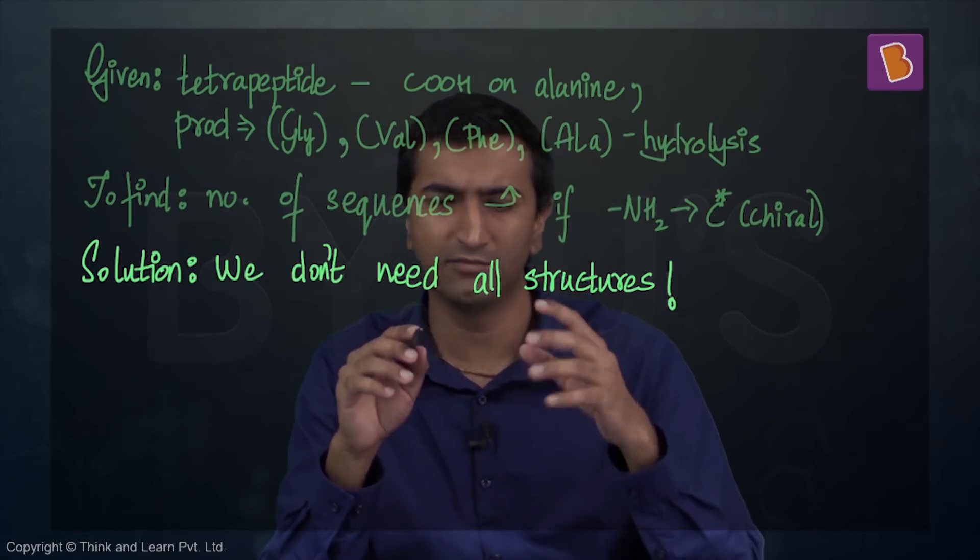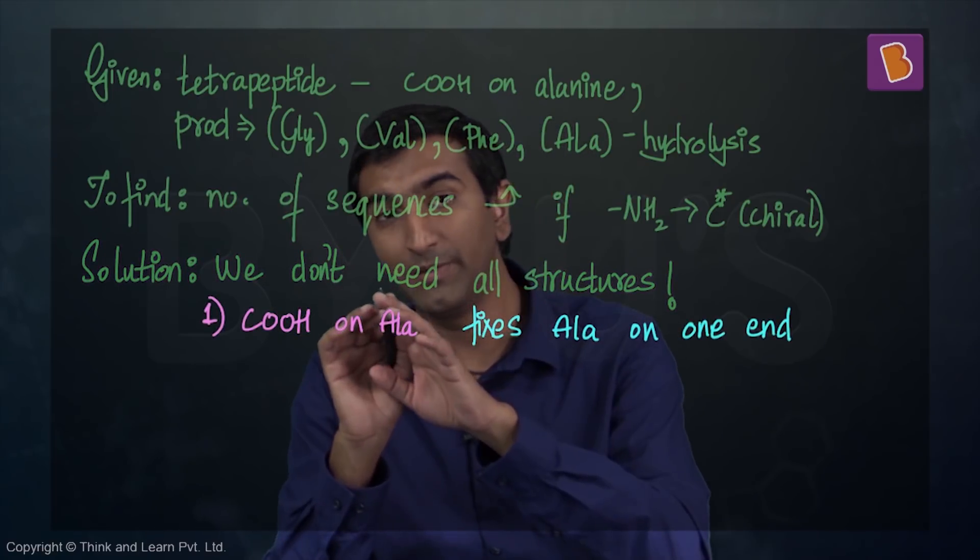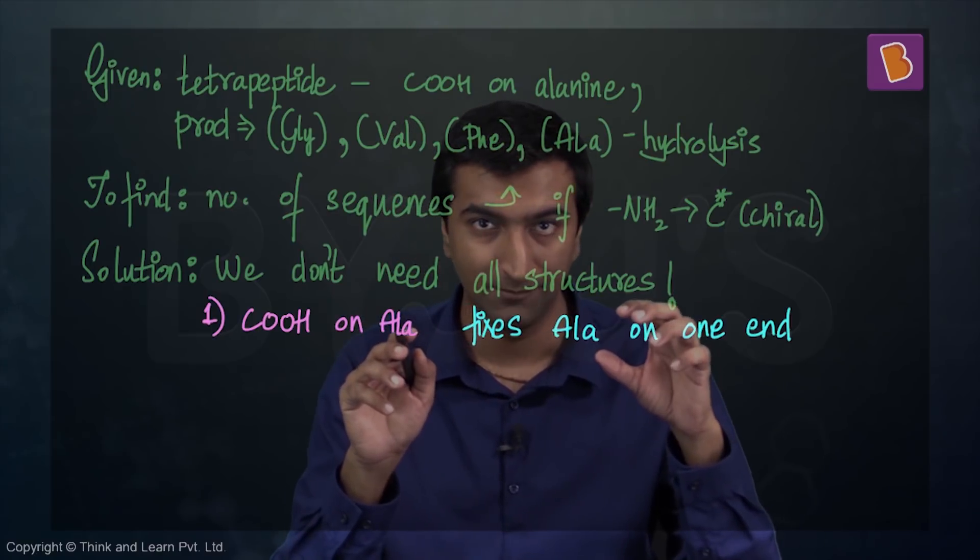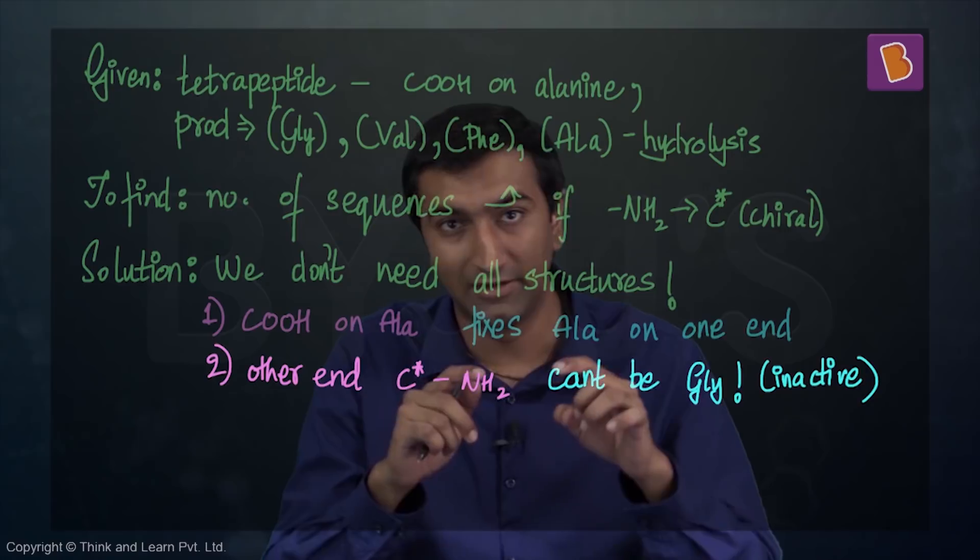The first condition is that alanine (Ala) is always going to be at the terminal COH, and the other end is always going to have a chiral center.